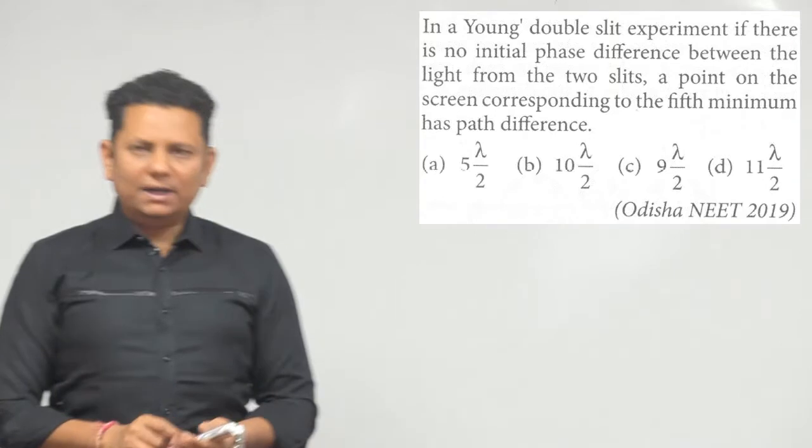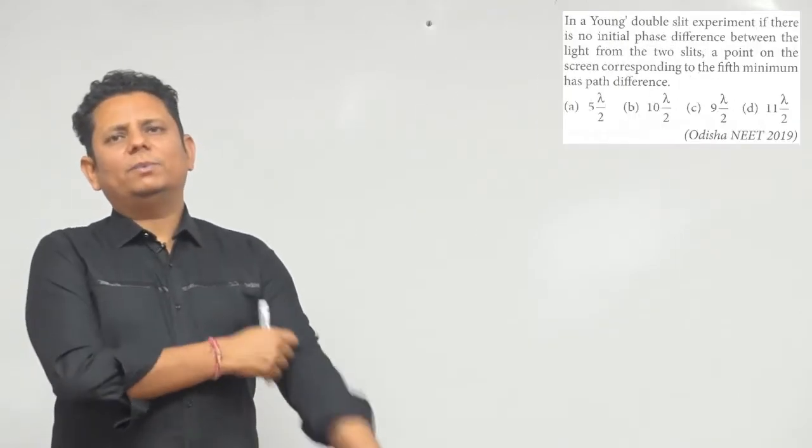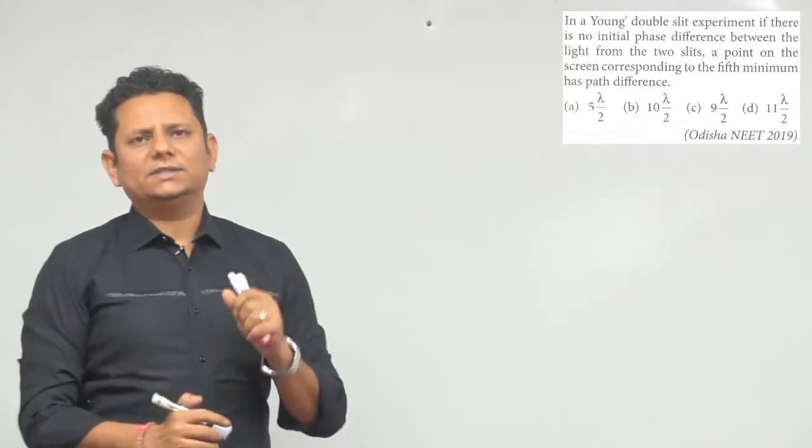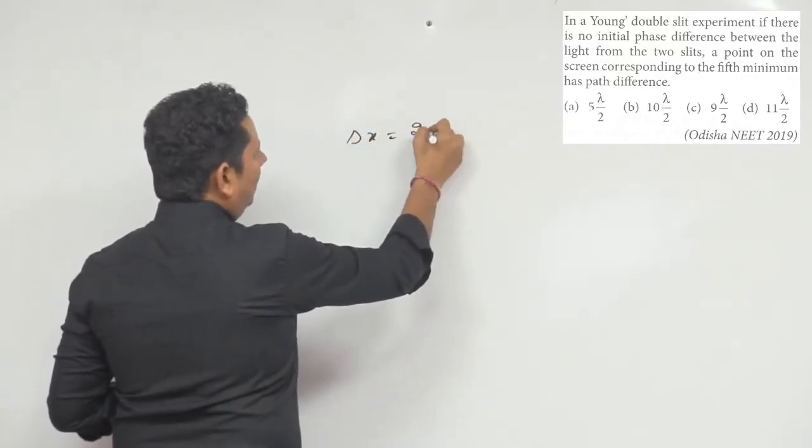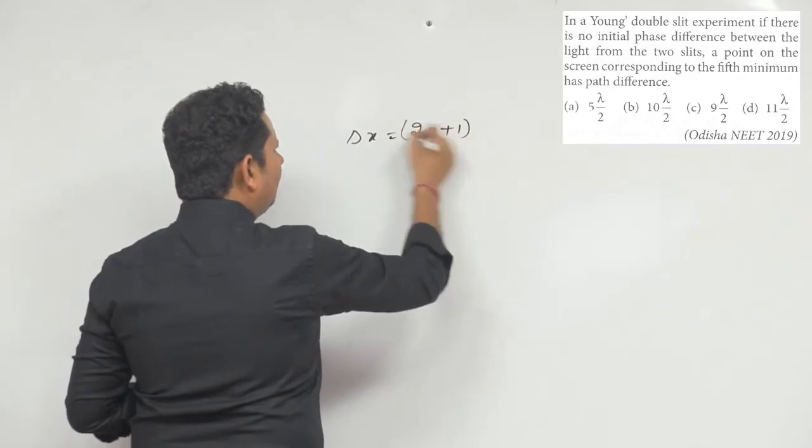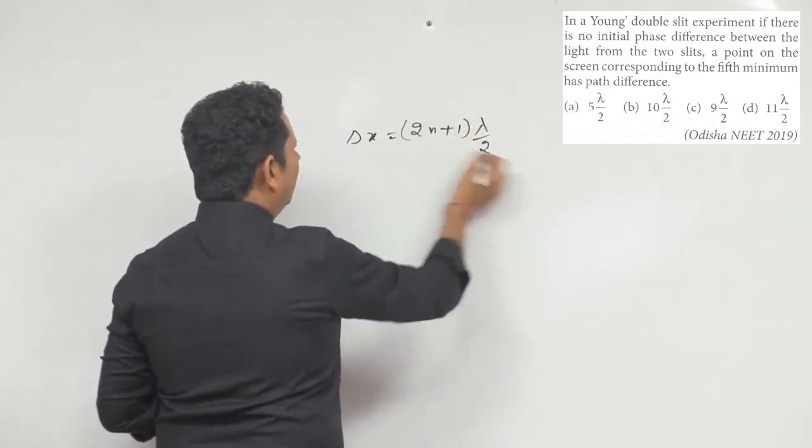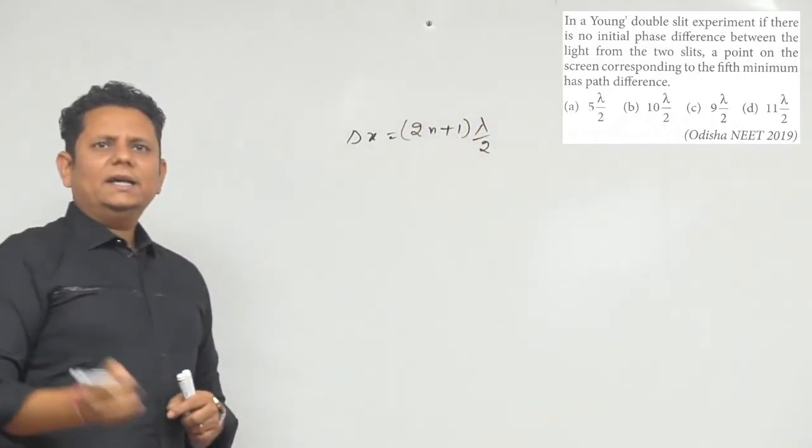This is a very simple question. We need to find the path difference for the fifth minima. We know that for minima, the path difference is (2n+1) multiplied by λ/2.